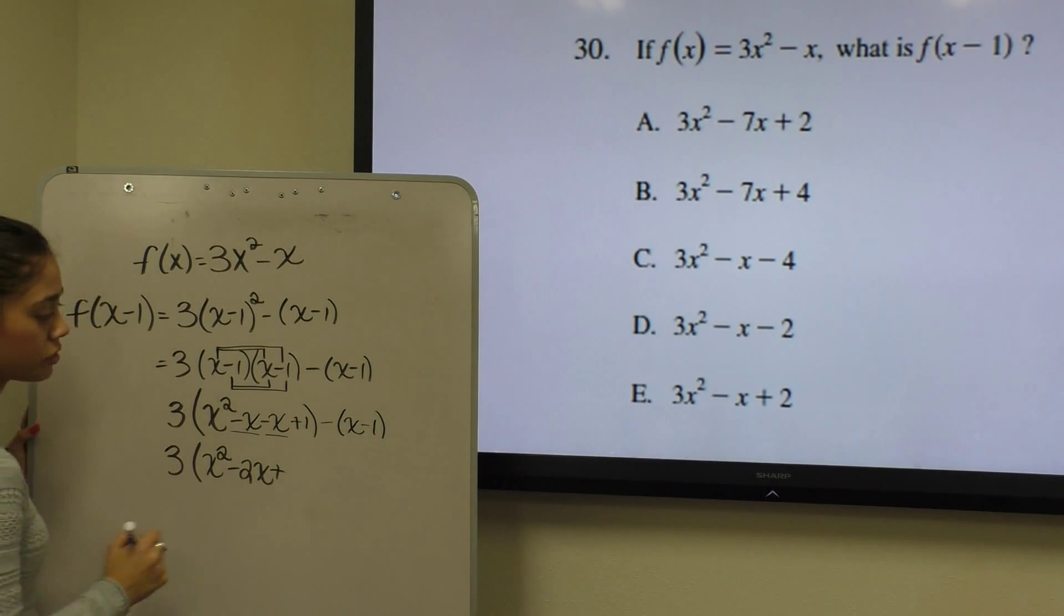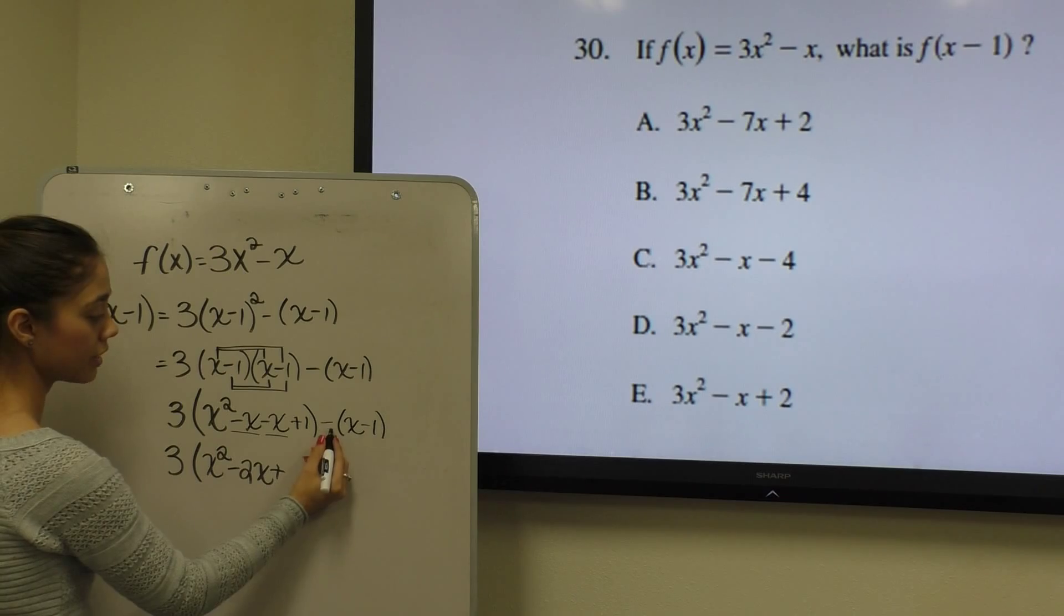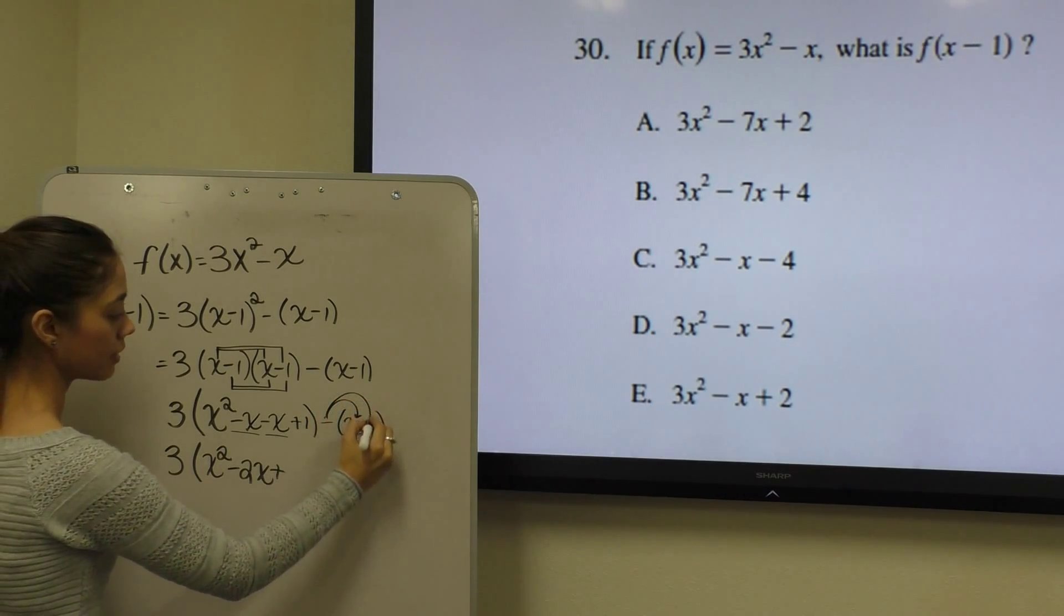Now in this case, we can use distributive property and distribute this negative to the x and to our negative 1.